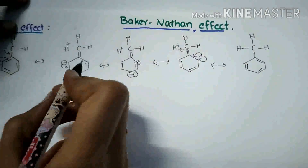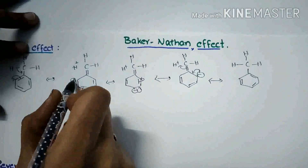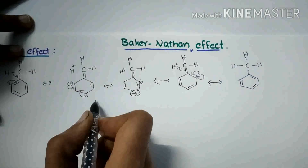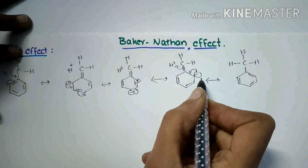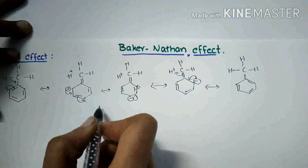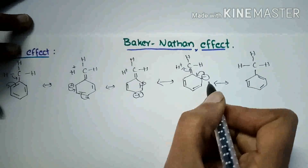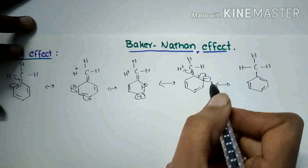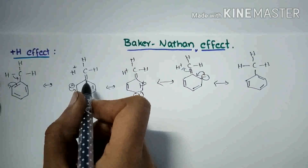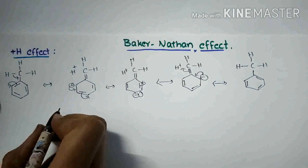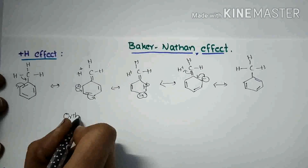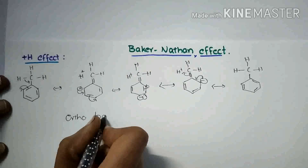As a result, the ortho (2, 6) and para (4) positions become electron rich. Substitution reactions will take place at these positions. So this positive hyperconjugative effect is also known as the ortho-para directing effect.